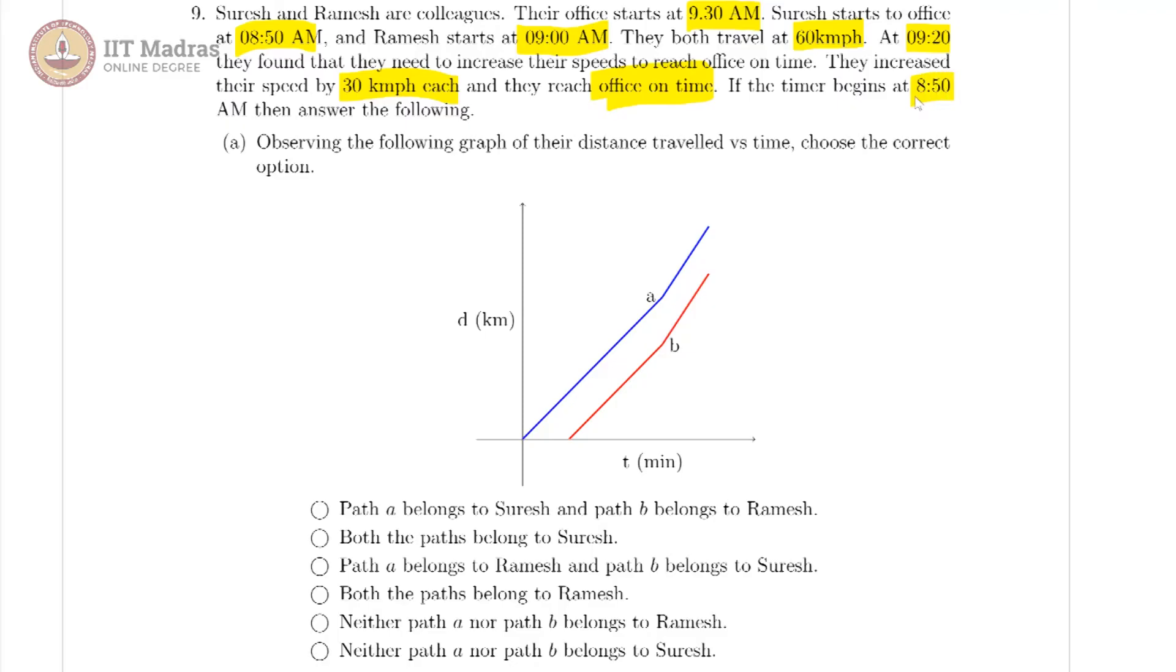The timer begins at 8:50 a.m., which means our origin is corresponding to 8:50 a.m. And since we know that Suresh started at 8:50, path A must belong to Suresh and Ramesh started a little late. So this here should be 9:00 a.m. Path B corresponds to Ramesh's journey, which gives us option A is correct.